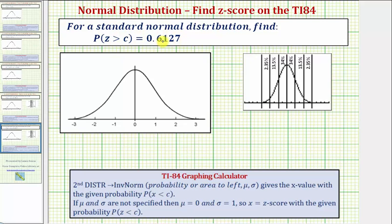This probability represents an area under the graph of the standard normal distribution. Because we have the probability of z being greater than c, this would be the area to the right of some value of c. Since when z equals zero, the area to the right would be 0.5, we should recognize the value of c is going to be negative.